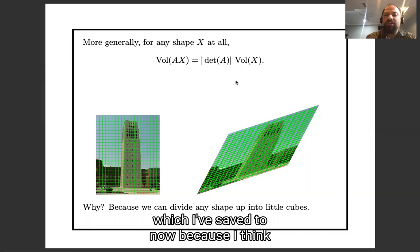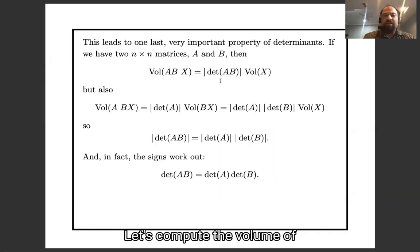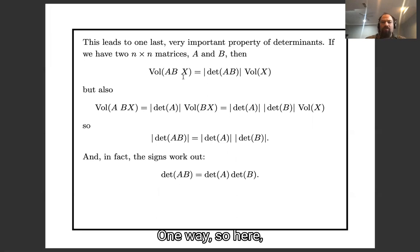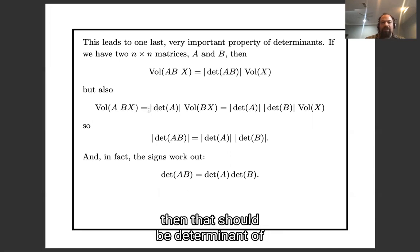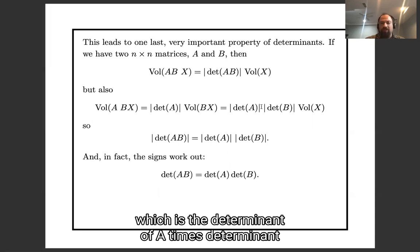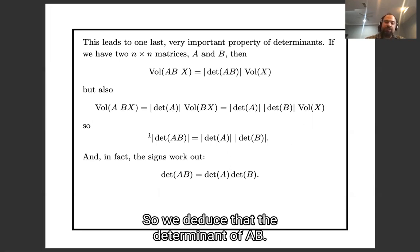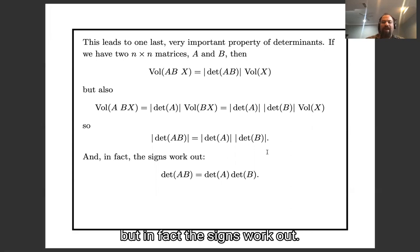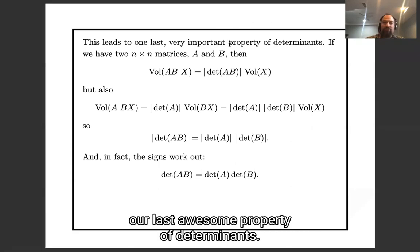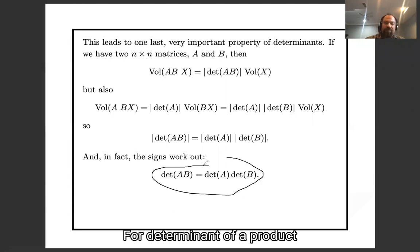There's one more really important property of determinants, best understood geometrically. Compute the volume of A times B times X in two ways. Thinking of it as (AB) times X, the volume is the absolute value of det(AB) times the volume of X. Thinking of it as A times (BX), the volume is det(A) times the volume of BX, which equals det(A) times det(B) times the volume of X. Therefore det(AB) equals det(A) times det(B): the determinant of a product is the product of the determinants.